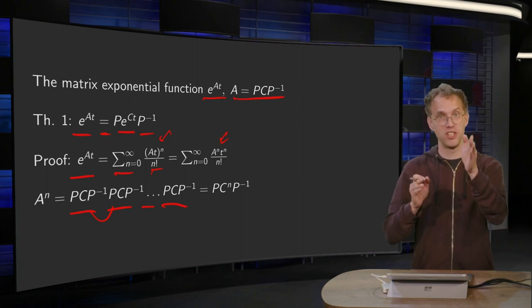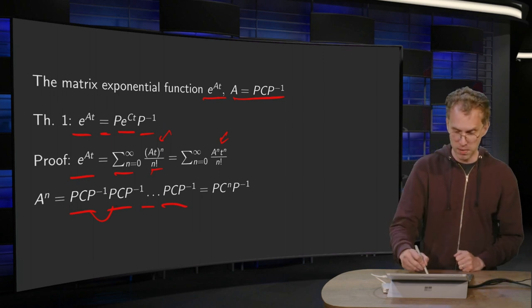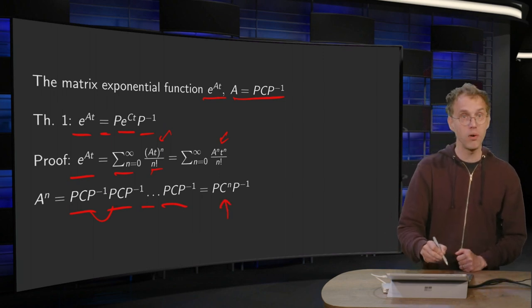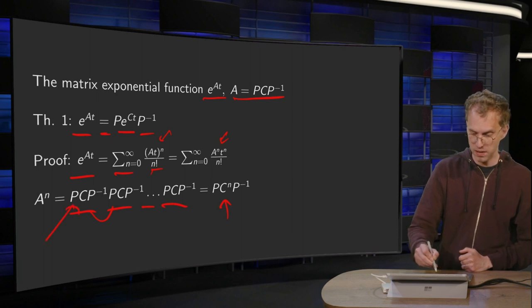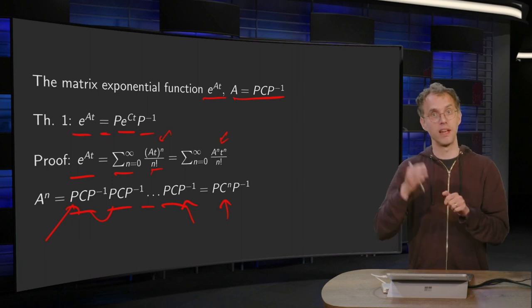So what you're left with is a c times c times c in the middle, so c to the power n in the middle. And the only ones left are the P in front and the P inverse, the last one. So a to the power n equals P times c to the power n times P inverse.